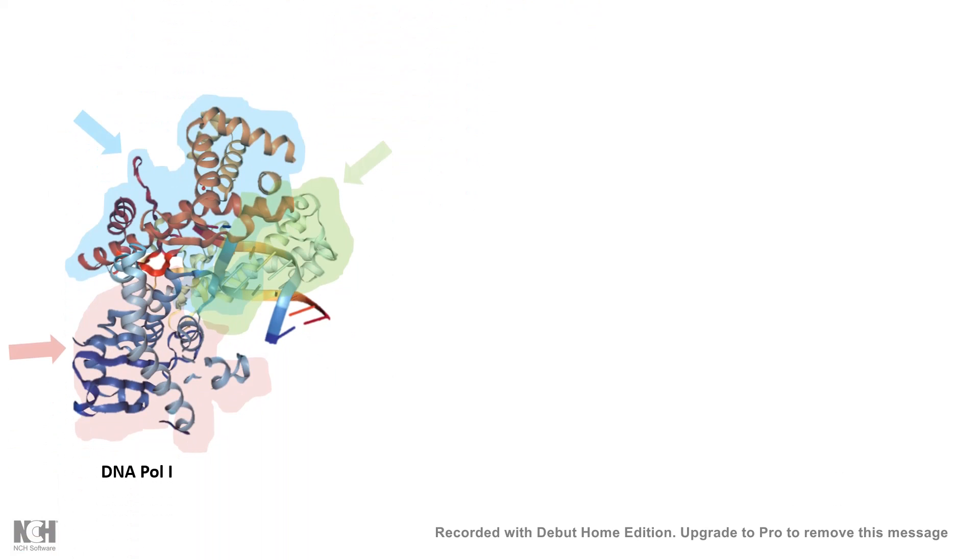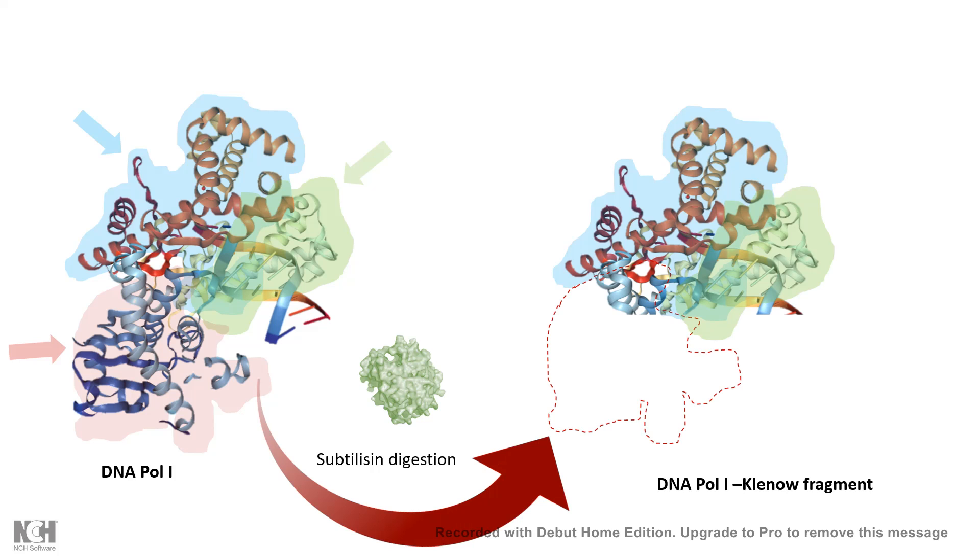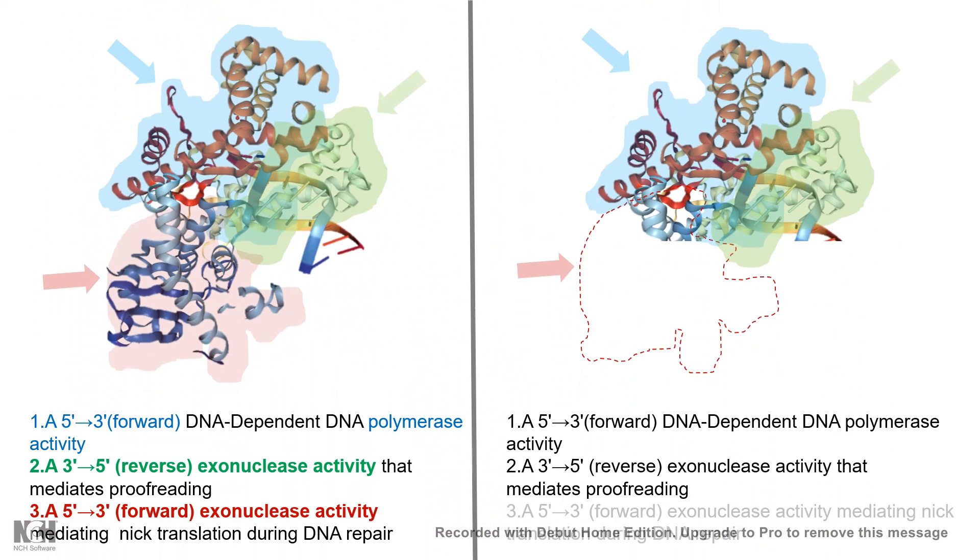Now DNA polymerase 1 can be digested with subtilisin, and that results in a large fragment of DNA polymerase 1, which is known as Klenow fragment. And this Klenow fragment lacks one domain, which is the 5' to 3' exonuclease activity containing domain. Now getting rid of this forward exonuclease activity makes the Klenow fragment very useful in multiple usage in the molecular biology field.